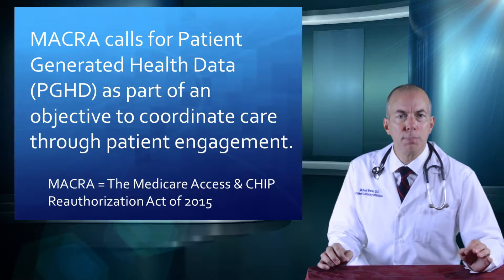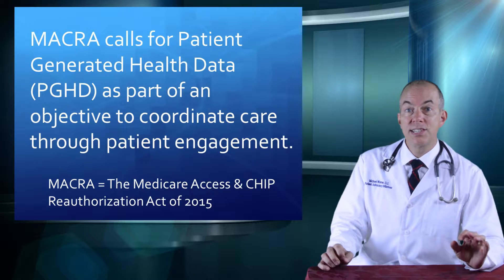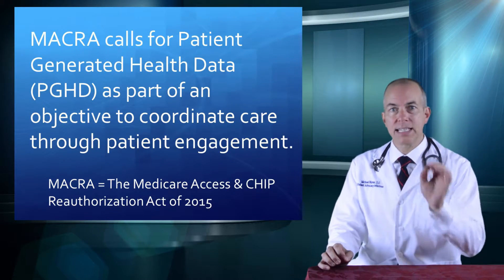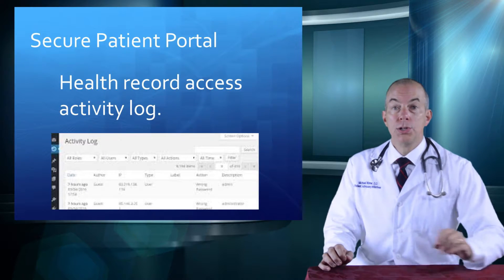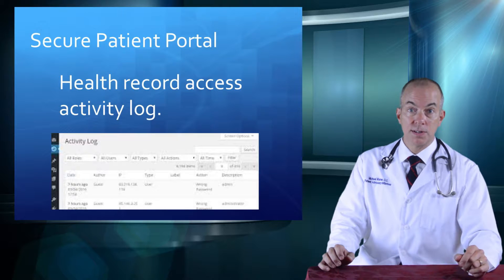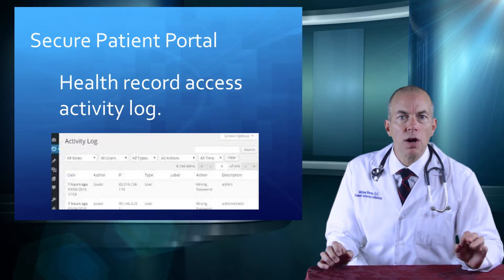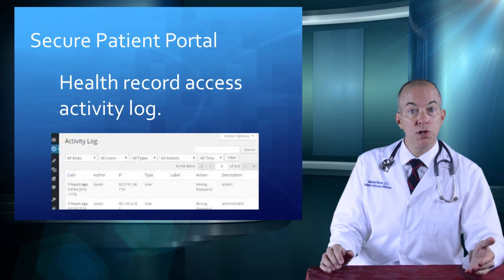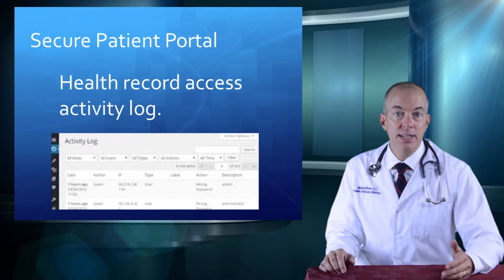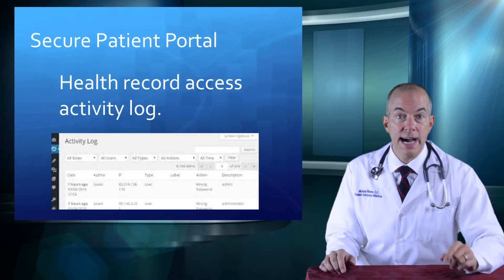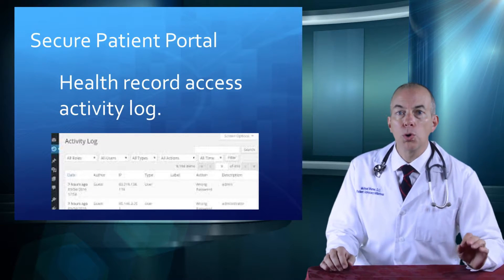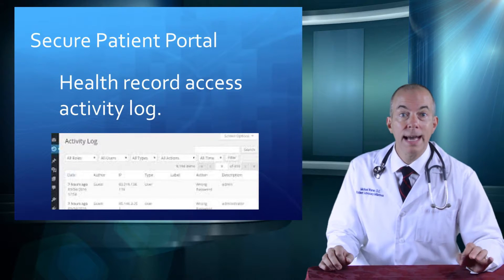An interesting component of Meaningful Use Stage 2 was the mandate for a health record access activity log. Certified electronic health record technology must have this as a function. The activity log displays whether the record was viewed, downloaded, or transmitted. It shows the date and time of each action, and also shows who took the action. This log allows patients and their providers to know who looked at the patient's health record and when.